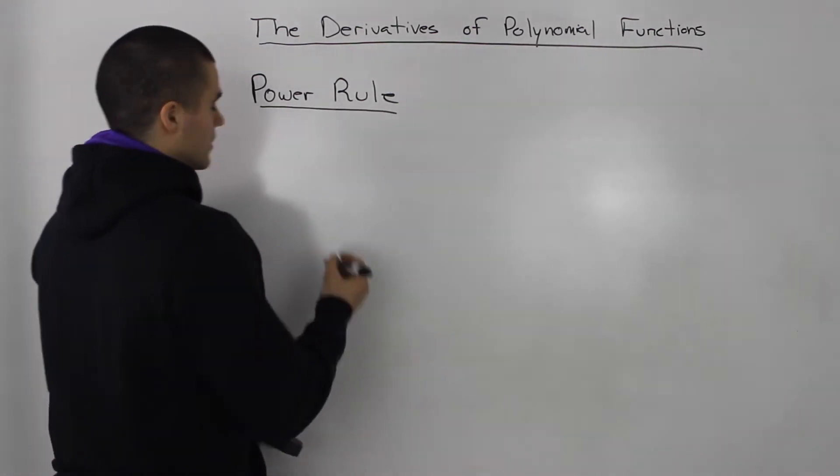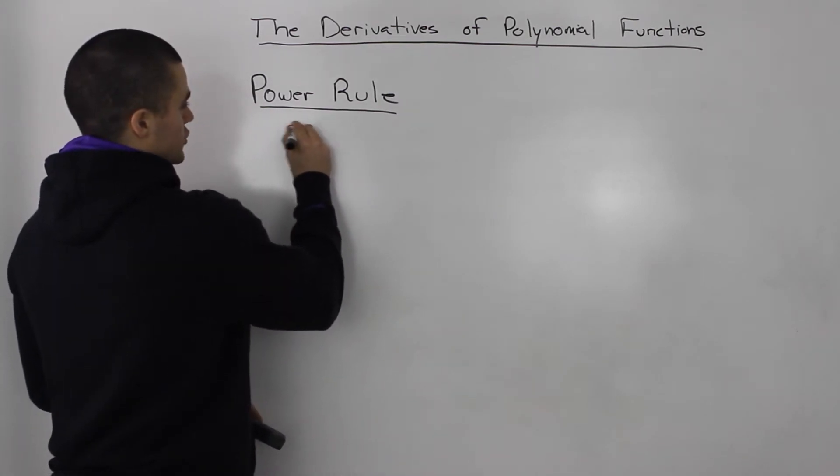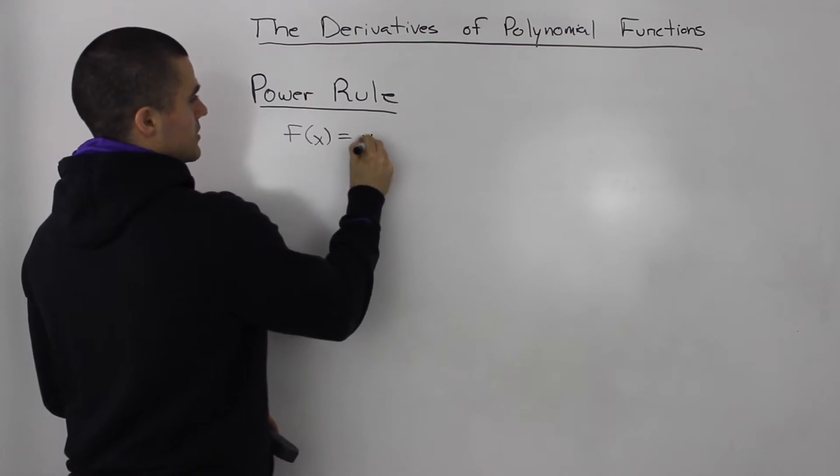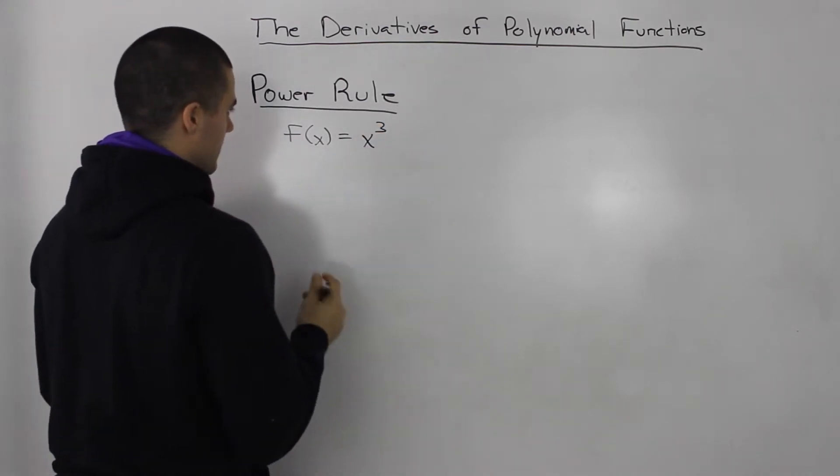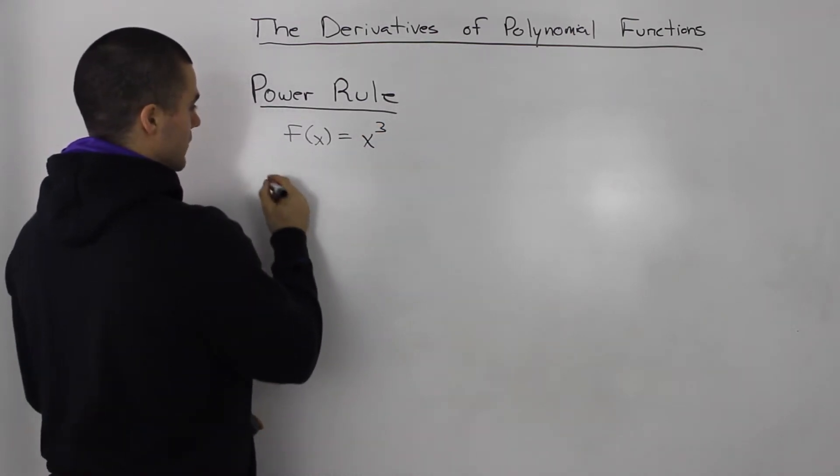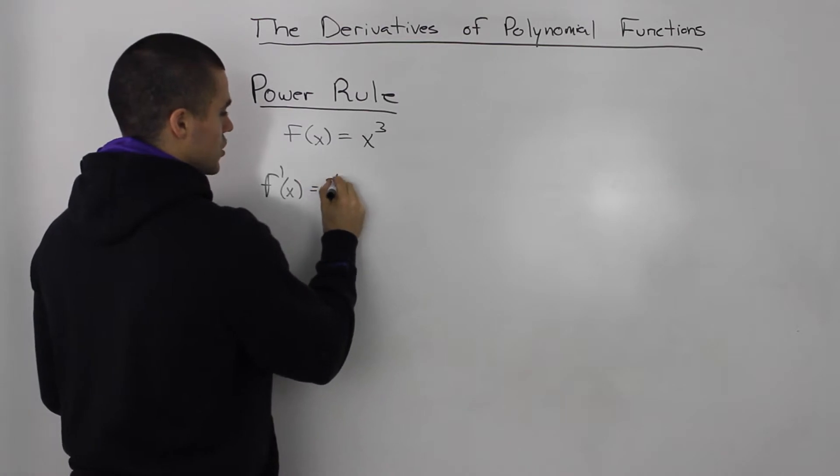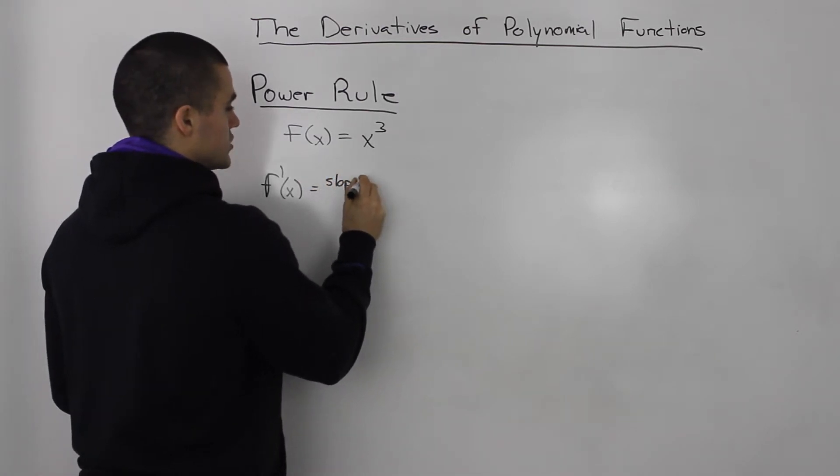So let's say I give you the function x to the power of 3, and I want to find the derivative f prime of x. What's the derivative again? Well, it's just the slope of the tangent. How do you find the derivative? Well, you use the definition of a derivative.